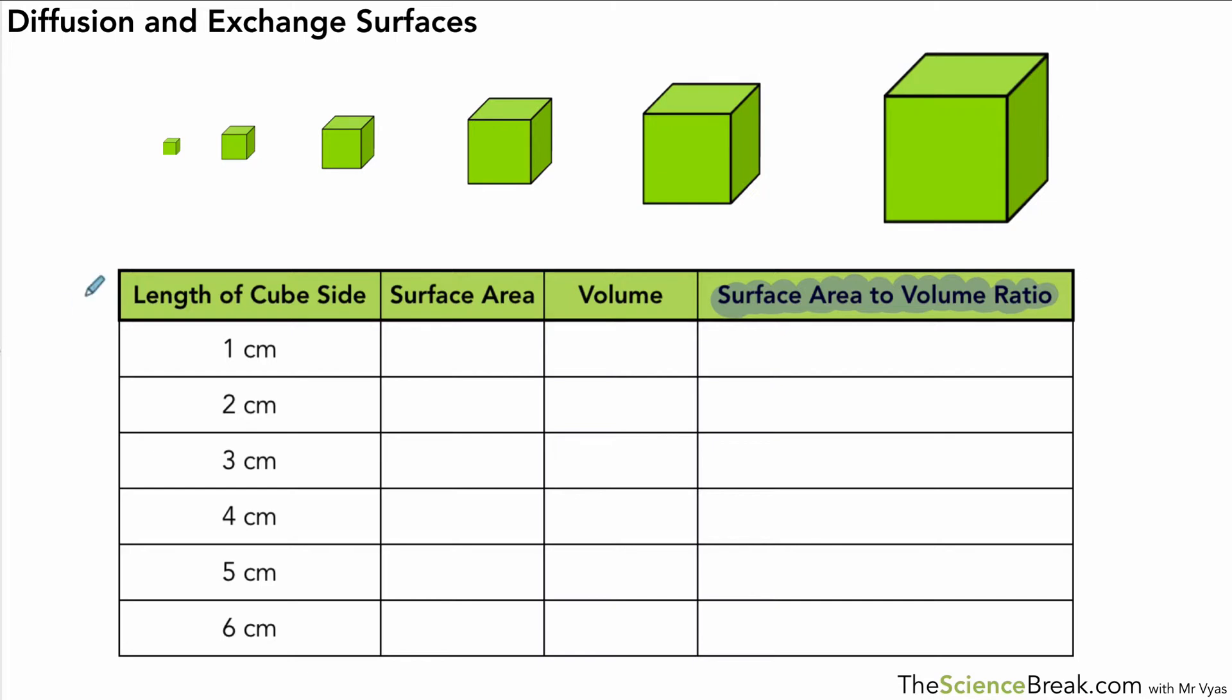Now you should be able to calculate that for simple shapes so we're going to go through how to do that in the first part of this video and we're going to do it with a series of cubes that increase in size by one centimeter per side as we go. So for the first one when we have a length of side of one centimeter we can work out the surface area and that's just a case of length times width times the number of sides which is six. The area of one side is one times one in this case and there are six sides so it's one times one times six which is six.